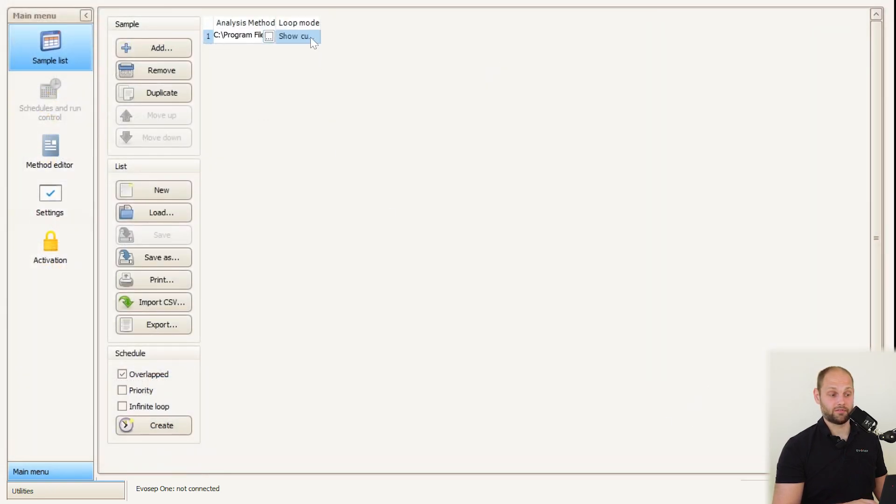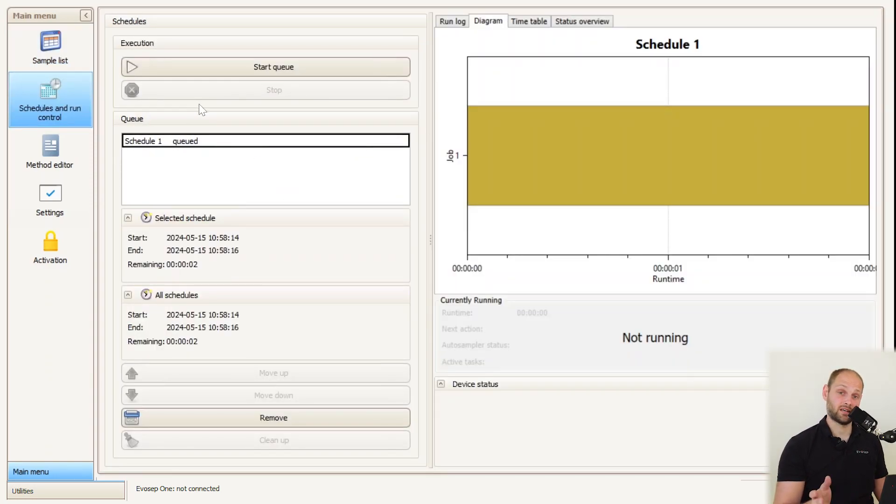With that open, the first thing you'll want to do is run the show current script within the method list. This tells us the current instrument's configuration. Here we click create and this takes us to our schedule and run control menu where we can start the queue.